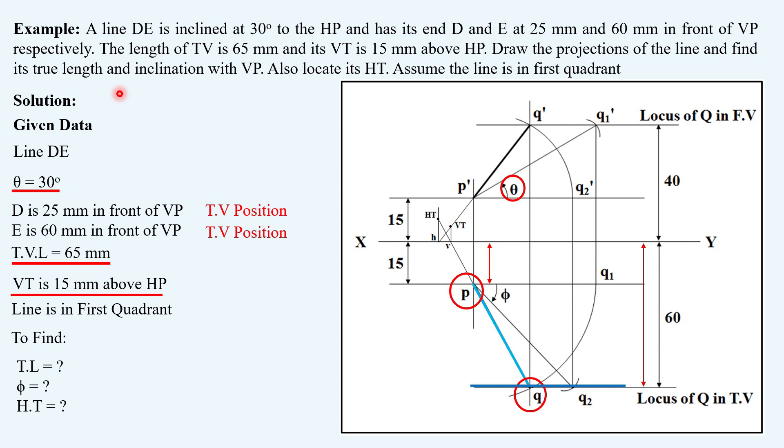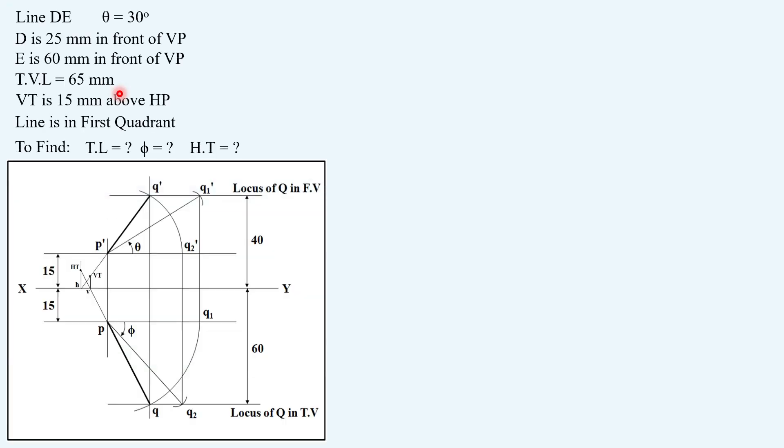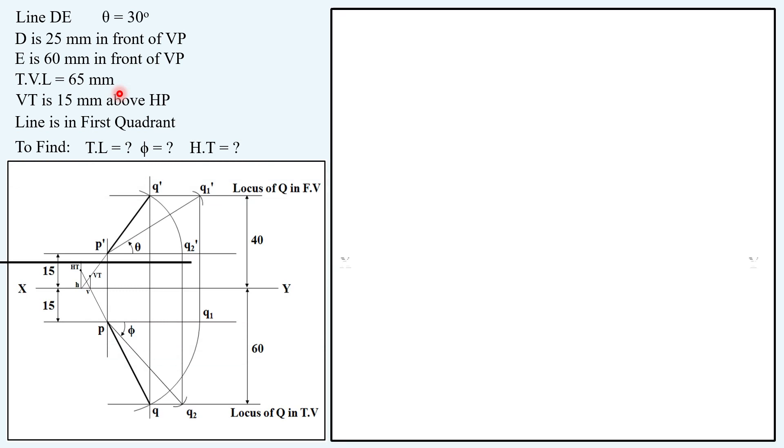So we can obtain this locus also. And the vertical trace is also given, so we have this VT given to us. Also, the question is of first quadrant. Now, let us put the things on paper. This is the given data we are keeping for reference. And this is the image we are going to use while plotting the given data.